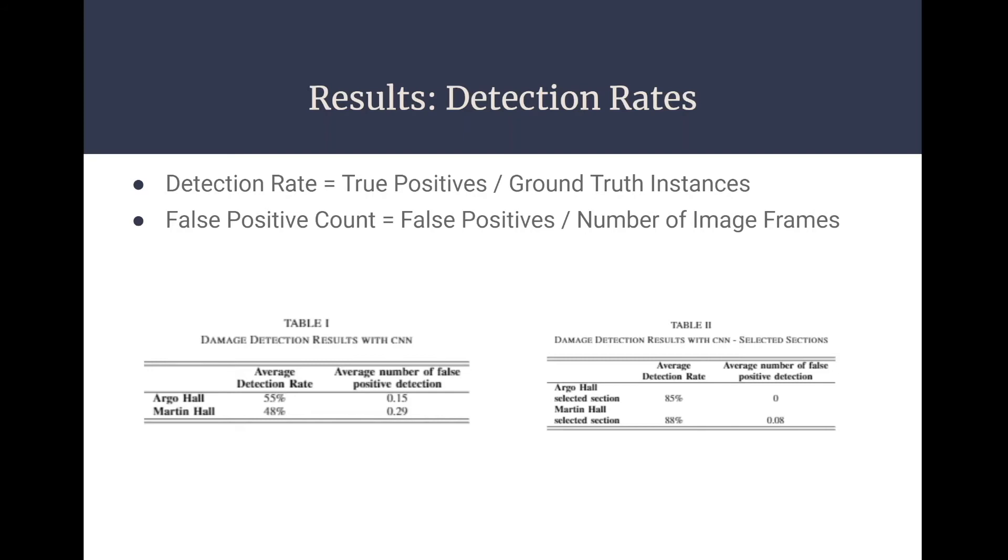If the bounded area covers less than 50% of the ground truth area or there is no relevant damage at the bounded location, the prediction becomes a false positive. When a prediction is not made for a relevant damage instance, this is a false negative.